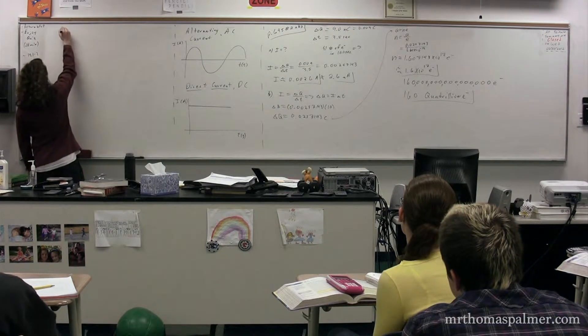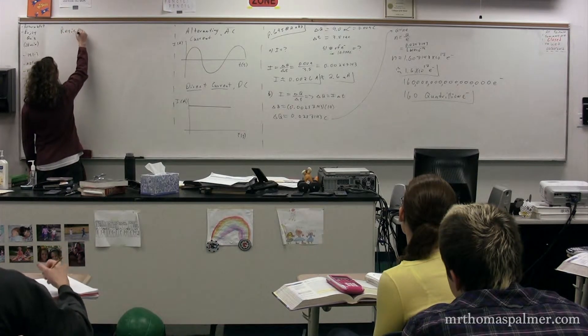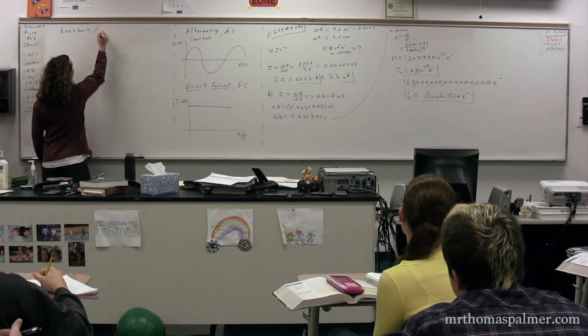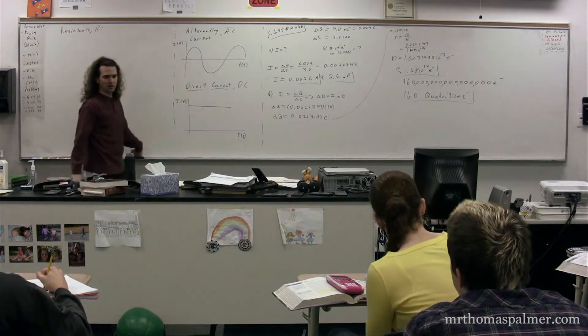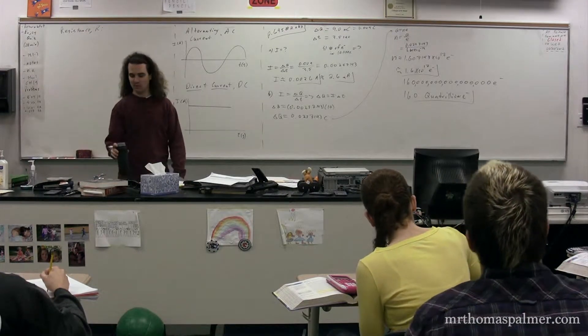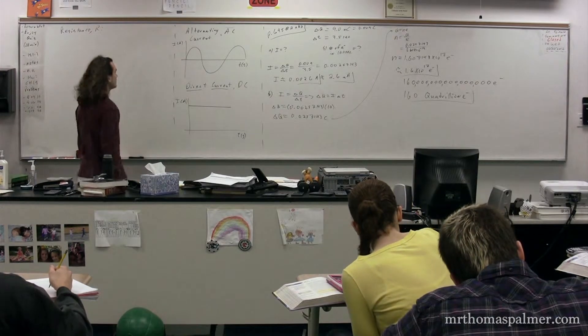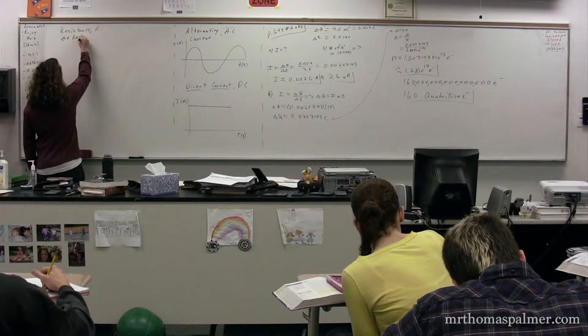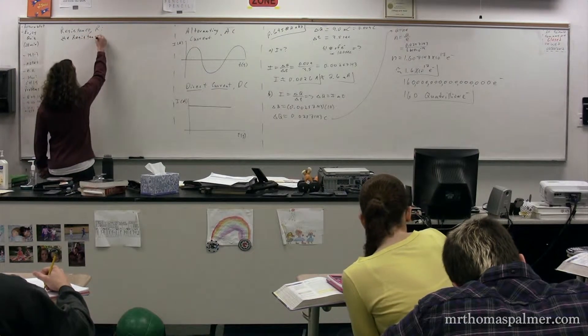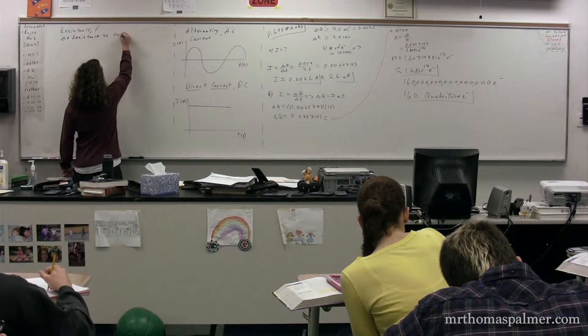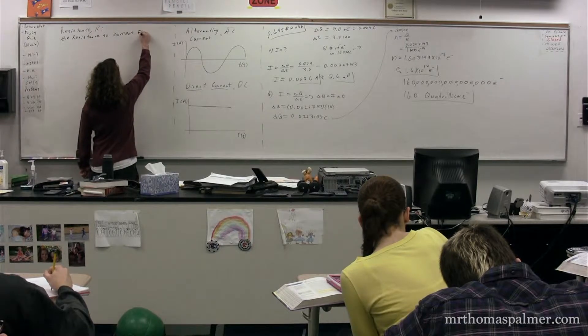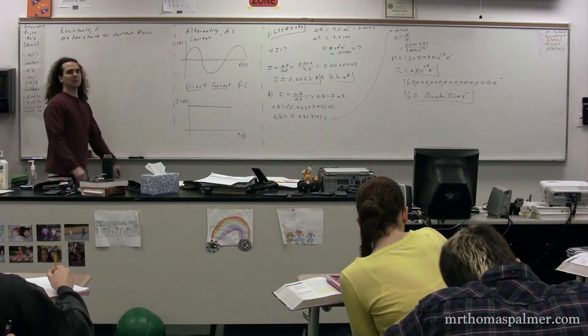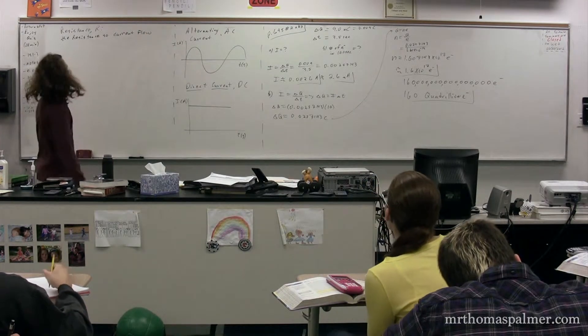Next we need to find something called resistance. The symbol for resistance is a capital R, and resistance is exactly what you think it would be. It is the resistance to current flow. Resistance, capital R, the resistance to current flow.